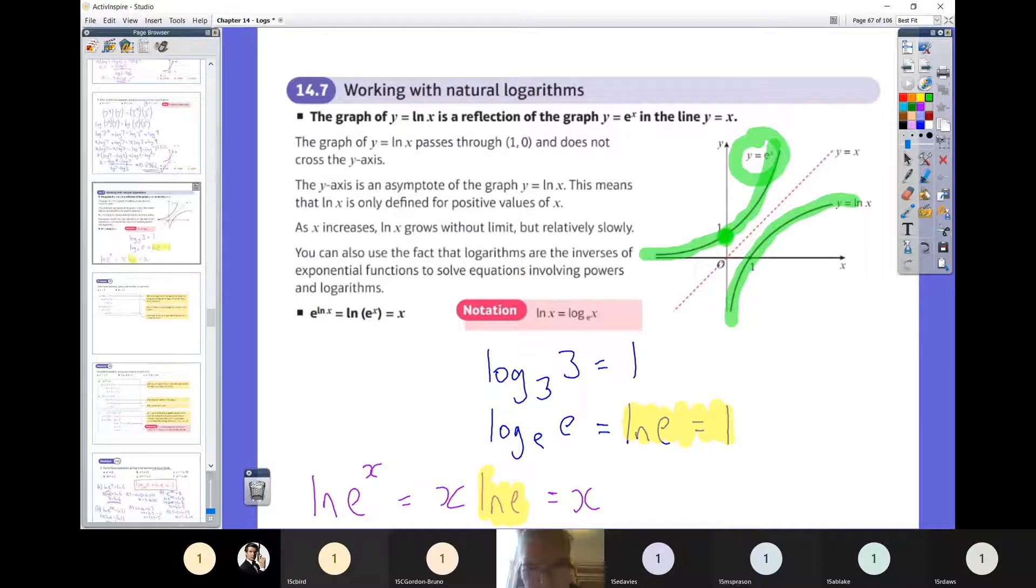So just if we go straight down to the bit I've done at the bottom in blue. So remember our log rules, the fourth big rule is log any number to its own base is one. So log e to the base e is going to be one. And log to the base e is what ln is. So by definition, if you ln e, you will get one.